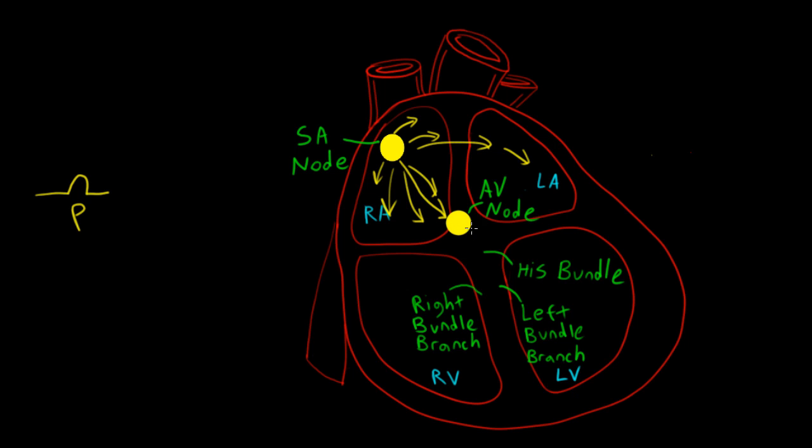So here's our impulse leaving the AV node. First, it goes down the Hiss bundle, which bifurcates into the left bundle branch and the right bundle branch.